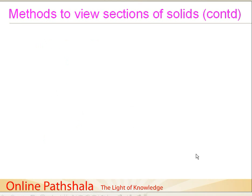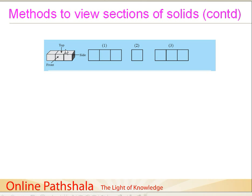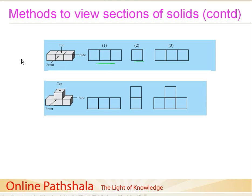Now there are a few interesting things you can do with this. In this example, the first view is the front view, the second is the side view, and the third is the top view. You can see that the front and the top views are the same in this case because of the dimensions. In another example, when we look from the front, this is the front view. For the side view, I can only see two cubes, and when I look from the top, I can see three cubes — so this is my top view.